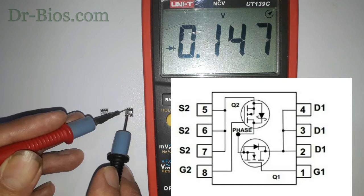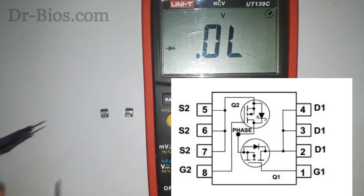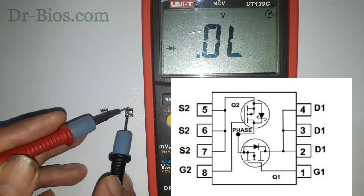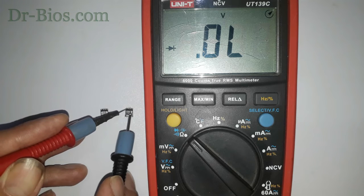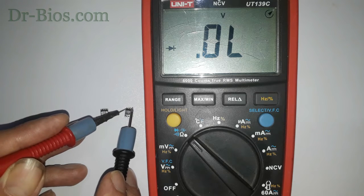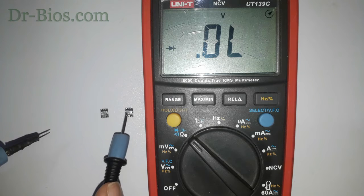And 0.147 V appears. And gate pin shouldn't show any numbers with source and drain pins. Yes, so this MOSFET is working.